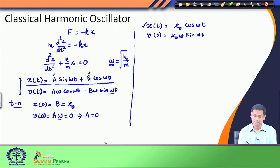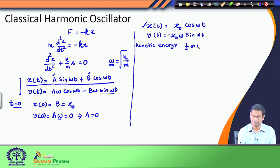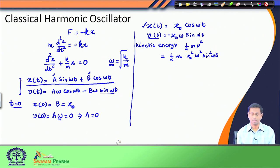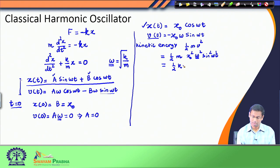Now we discuss the kinetic energy. Since we know the velocity, the kinetic energy is ½mv². Substituting v, the kinetic energy becomes ½m·x₀²·ω²·sin²(ωt). Since omega squared equals k/m, the m's cancel, and I am left with the kinetic energy equals ½k·x₀²·sin²(ωt).